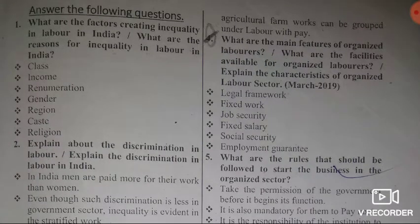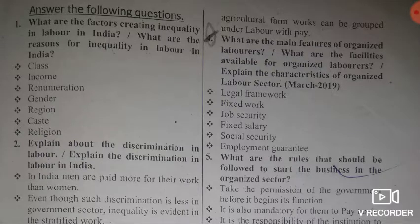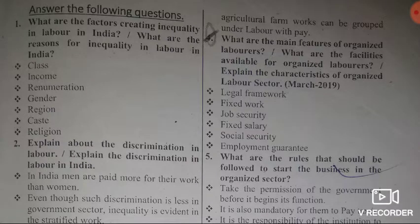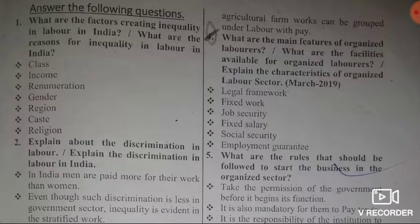Fourth question: What are the main features of organized laborers? Or, what are the facilities available for organized laborers? Or, explain the characteristics of organized laborers. The answer — labor operates under a legal framework.